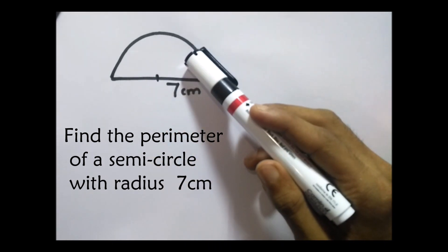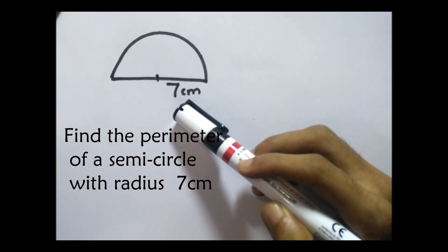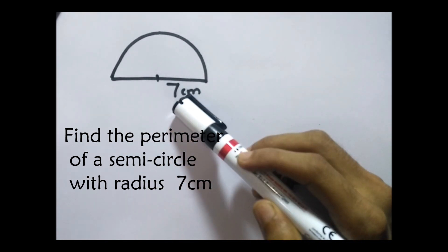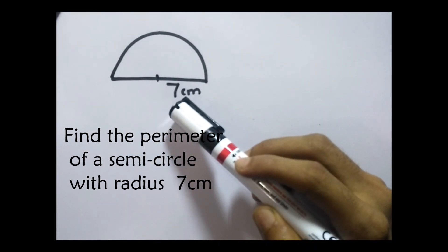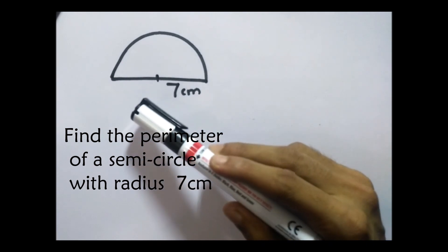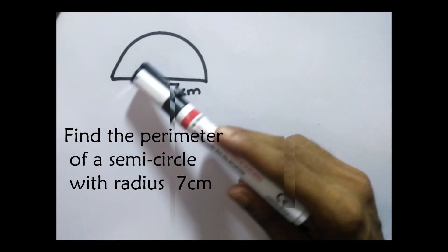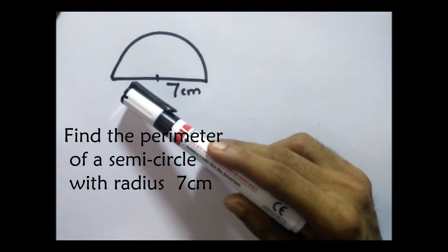To calculate the perimeter there are two edges. We already have the magnitude of the radius - the radius is 7 centimeters. Then how about the diameter? The diameter should be twice the radius, so two times 7 equals 14 centimeters. Now we have to find the arc length only.